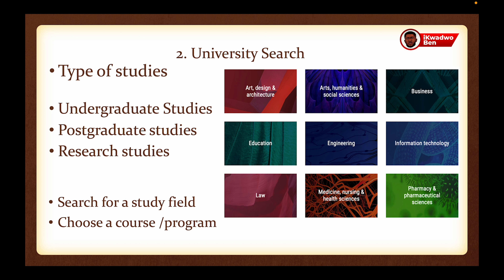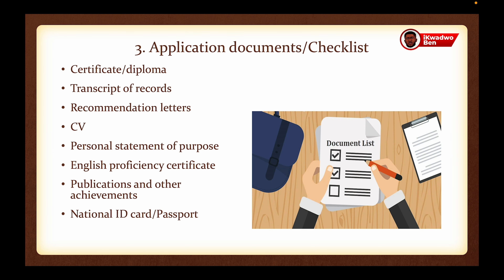After finding out the universities available in these countries, you have to decide what type of studies you want to do. We have undergraduate studies, postgraduate studies, or research studies. After getting access to the university and deciding on your level of study, you then choose your study field. Available fields include art and design, architecture, humanities, social sciences, business, education, engineering, information technology, law, medicine, nursing and health sciences, pharmacy and pharmaceutical sciences. Every study field has respective courses or programs available for undergraduate, postgraduate, or research studies.